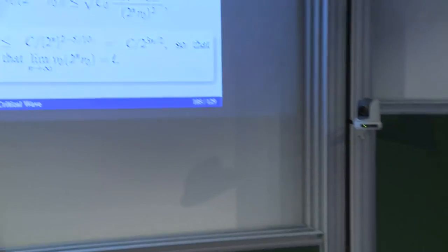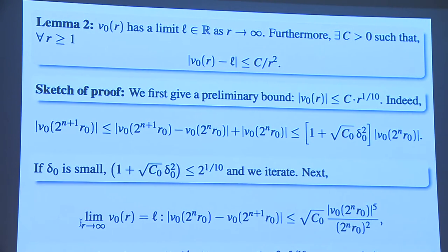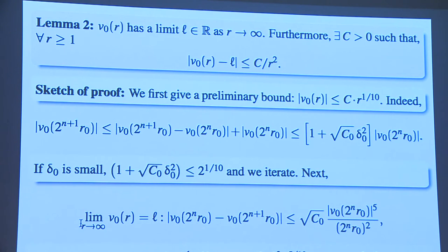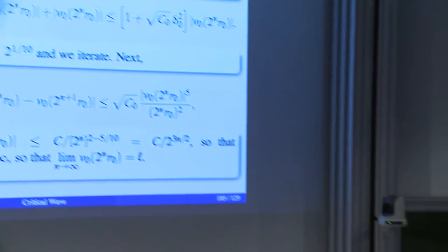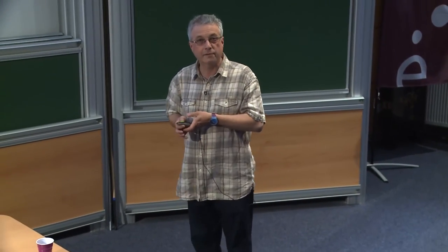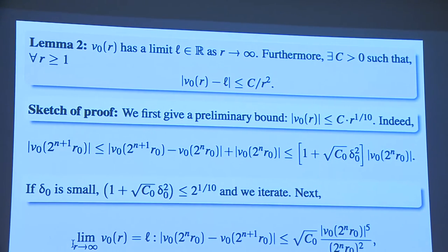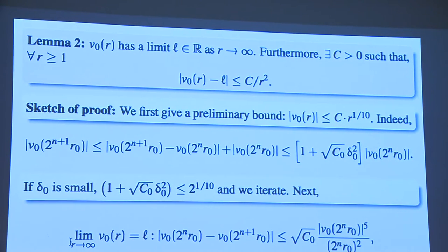The second statement is that V₀ has a limit L, and I can tell at what rate the limit is attained. The proof has a few steps. First, if I'm going to have a limit it will be bounded. I first prove a weak growth condition at infinity — the growth is by the power one-tenth. By taking delta-naught small enough, I can improve the one-tenth to any epsilon I want, but one-tenth is enough.